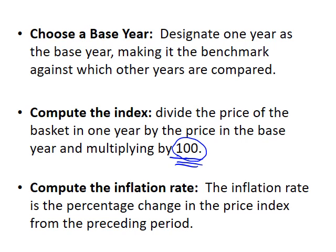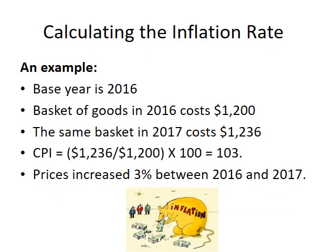The index might be lower, like 98, which means the overall price level has dropped, or something like 103, meaning the overall price level compared to the base year has gone up by 3%. For example, if the base year is 2016 and the basket costs $1,200, and the same basket a year later costs $1,236, you divide $1,236 by $1,200 and multiply by 100, giving you an index of 103. The answer fluctuates around 100 and there is no percentage sign. Prices increased by 3% between 2016 and 2017.